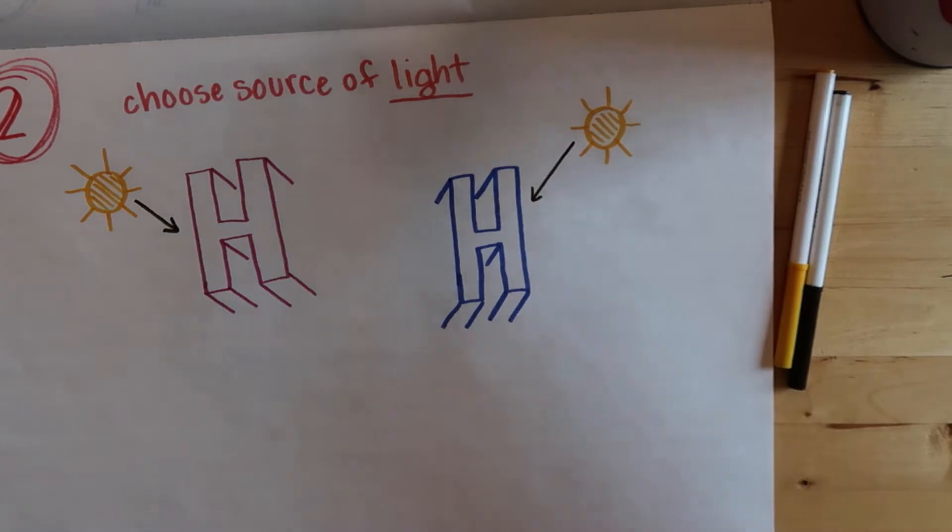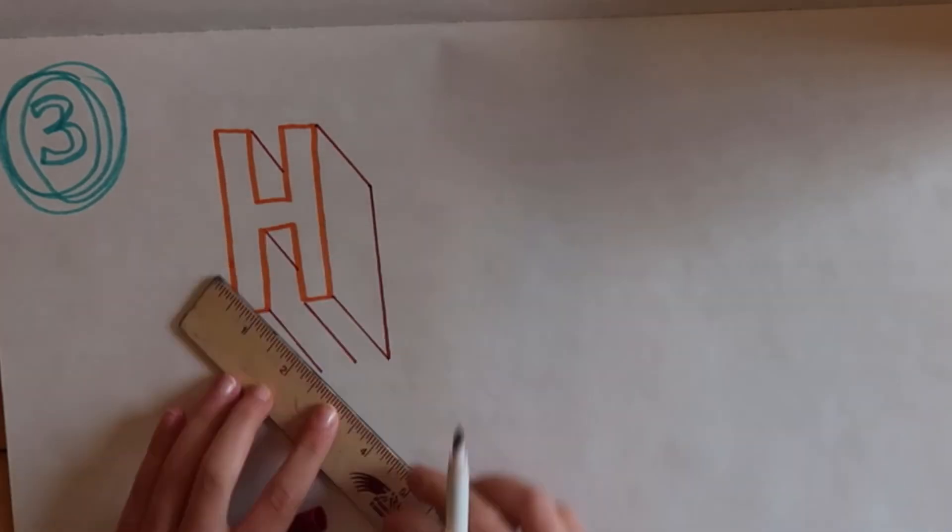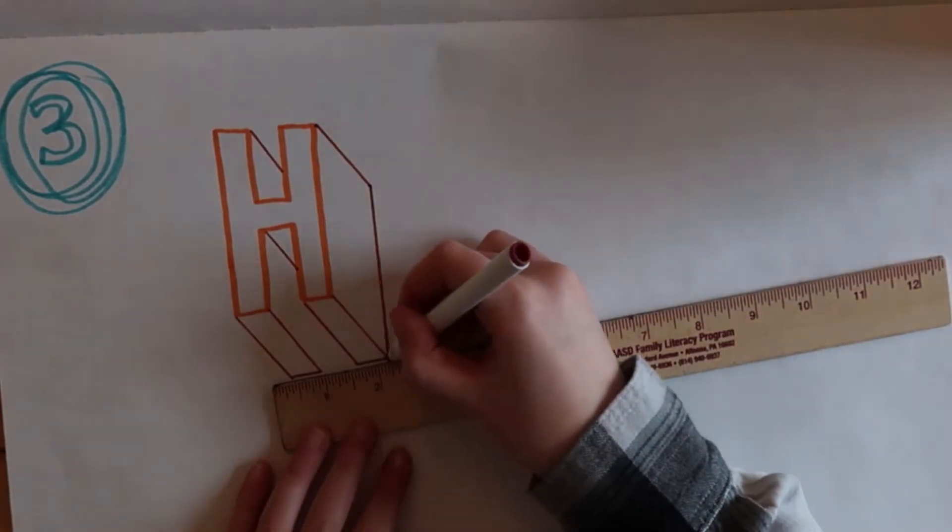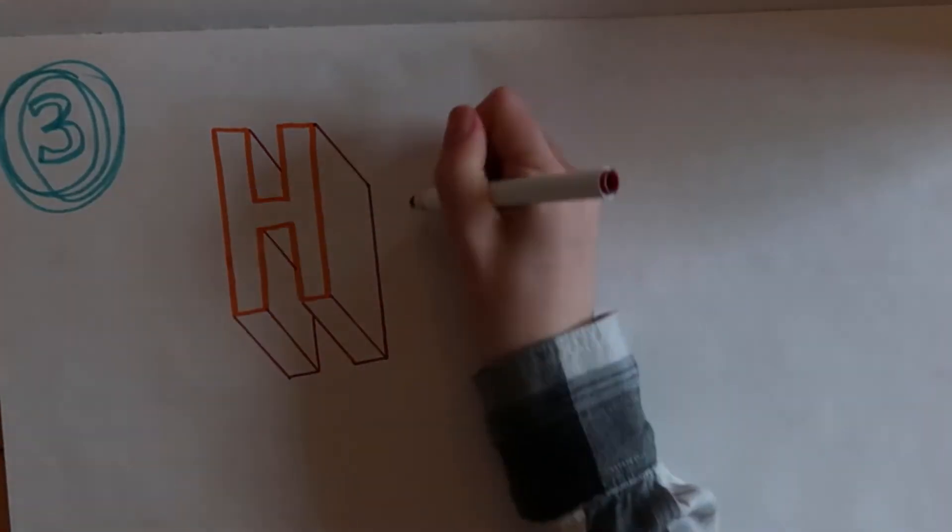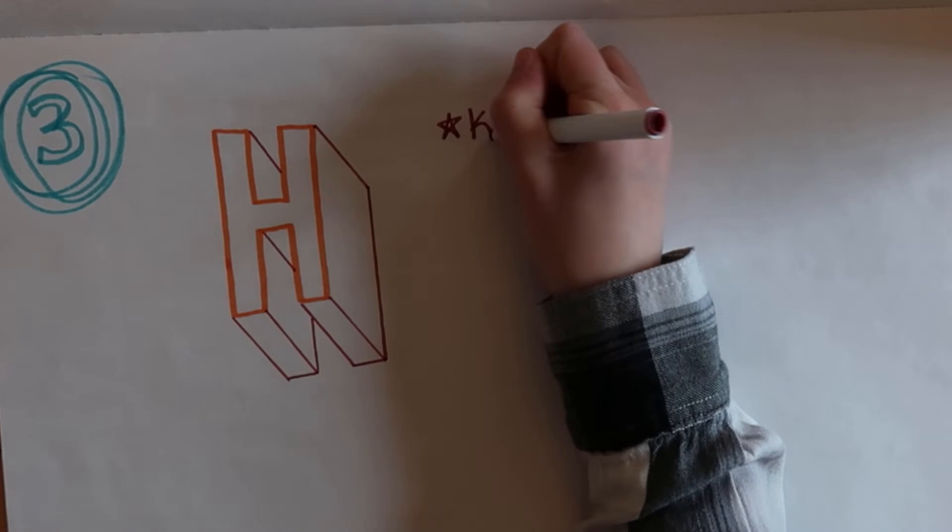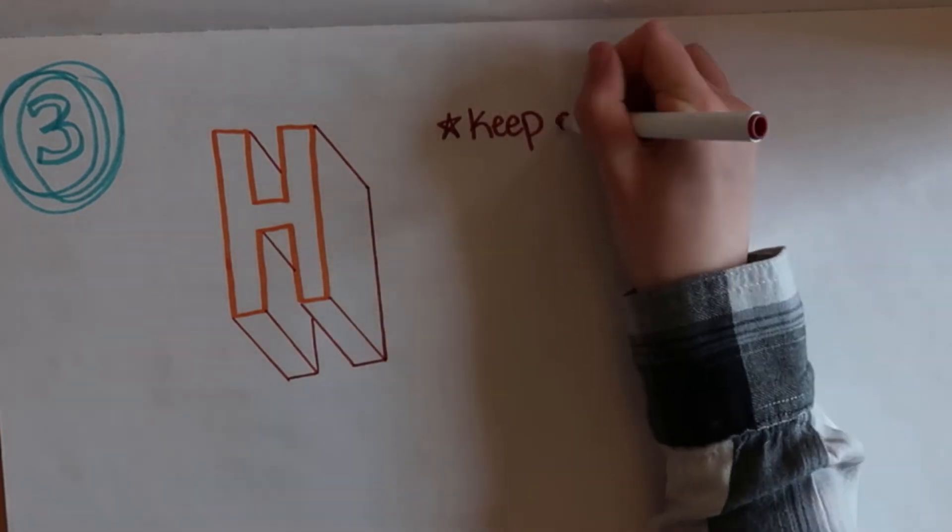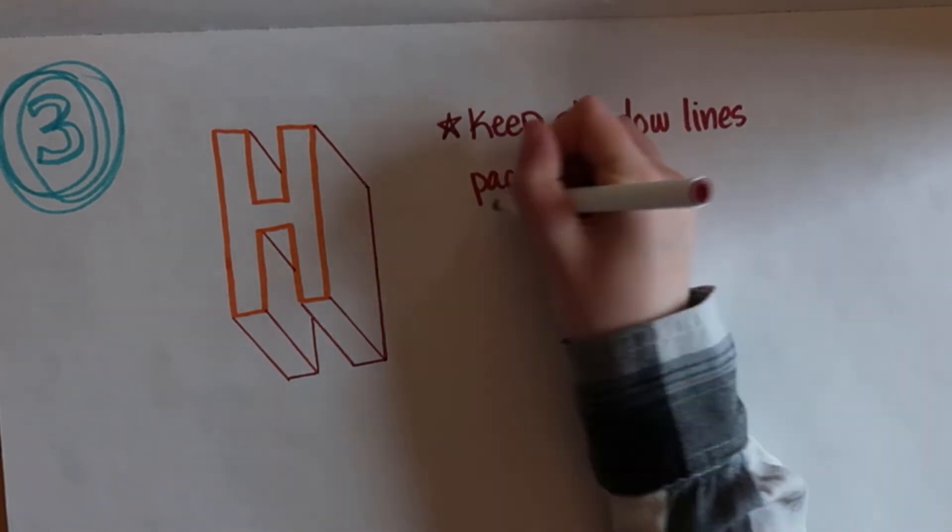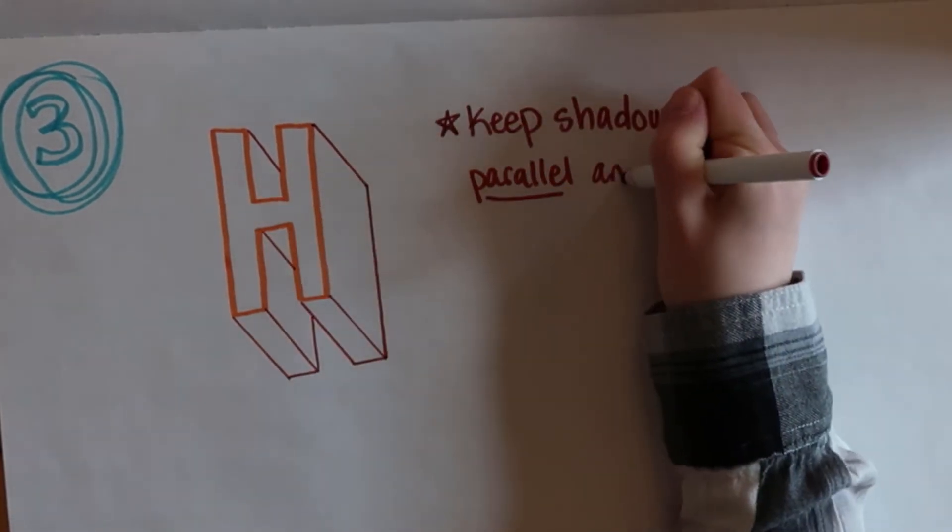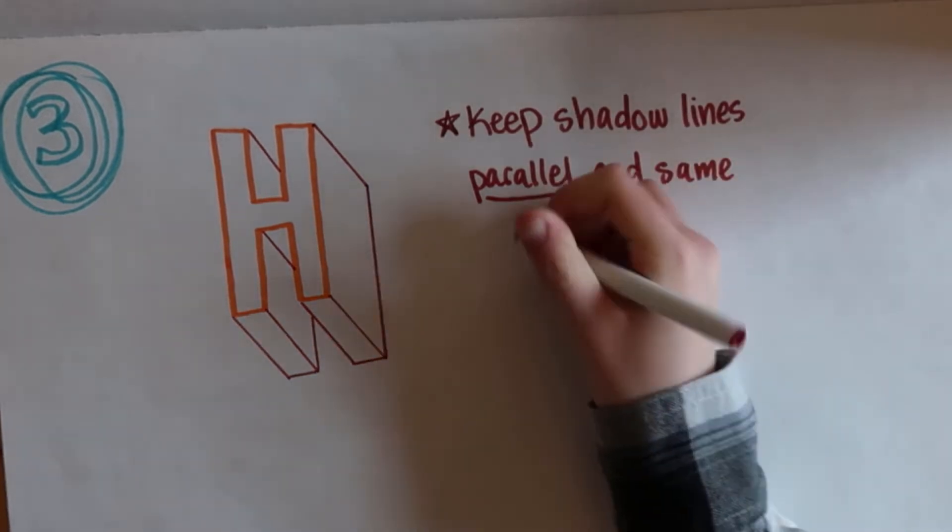So the third thing is you always want to draw with a ruler. I know this sounds really basic, but it really helps and it really just makes it look a lot better if all the lines are straight. You also want to keep all of your lines parallel because if they're not parallel then it'll just look jagged and more like graffiti more than just 3D block letters.